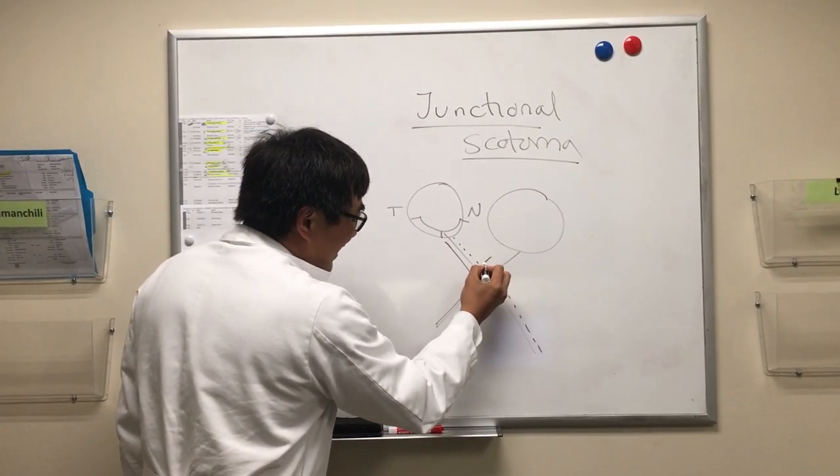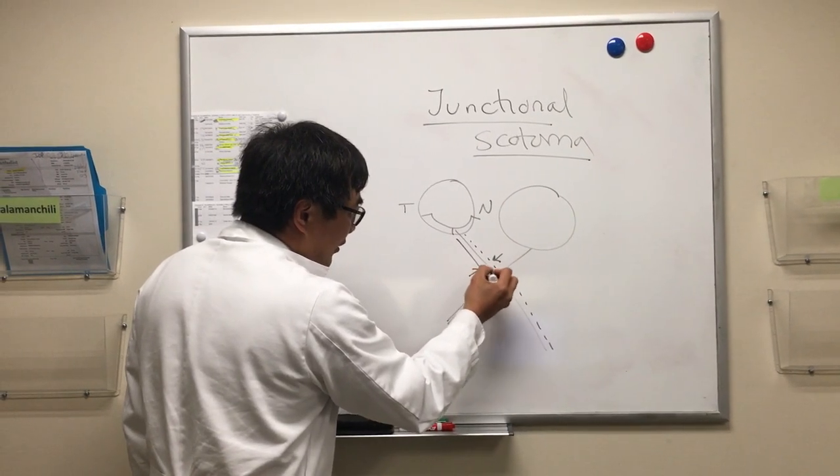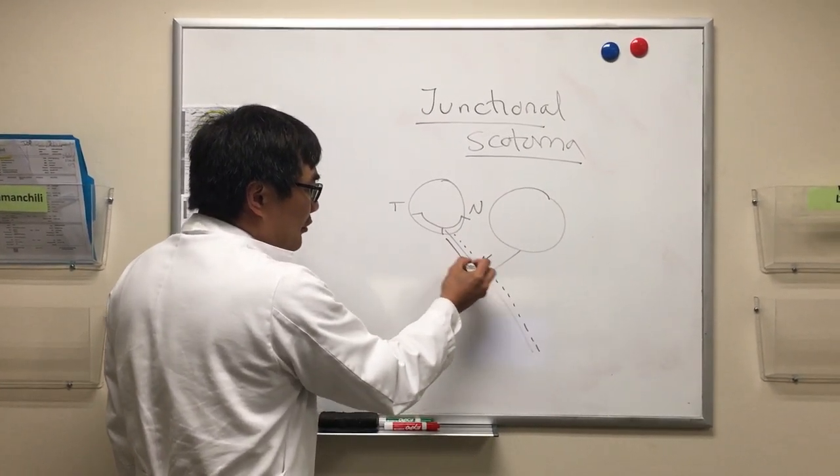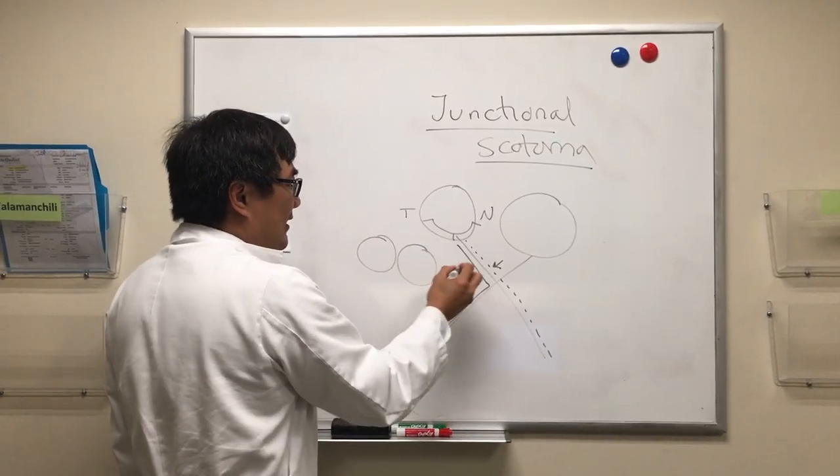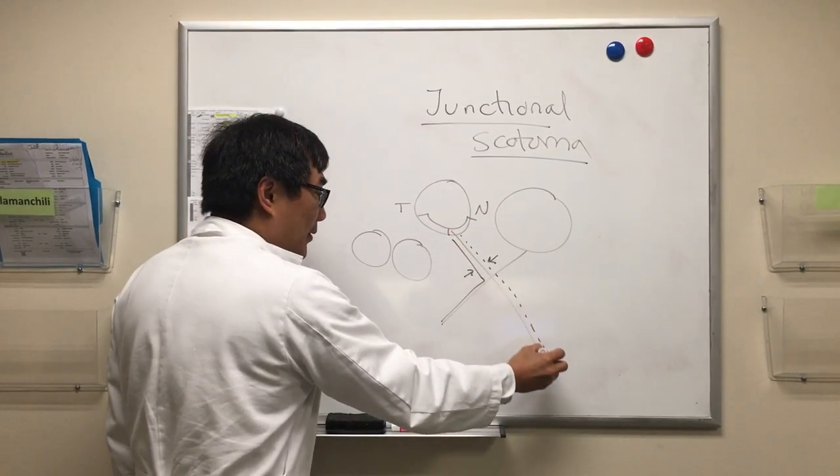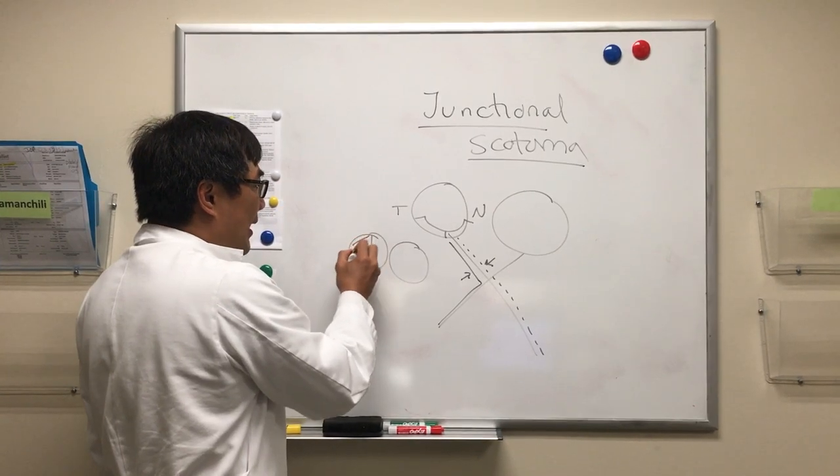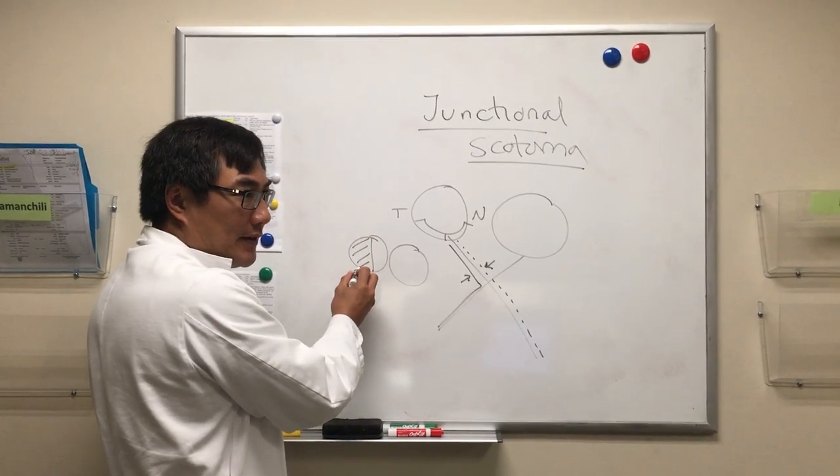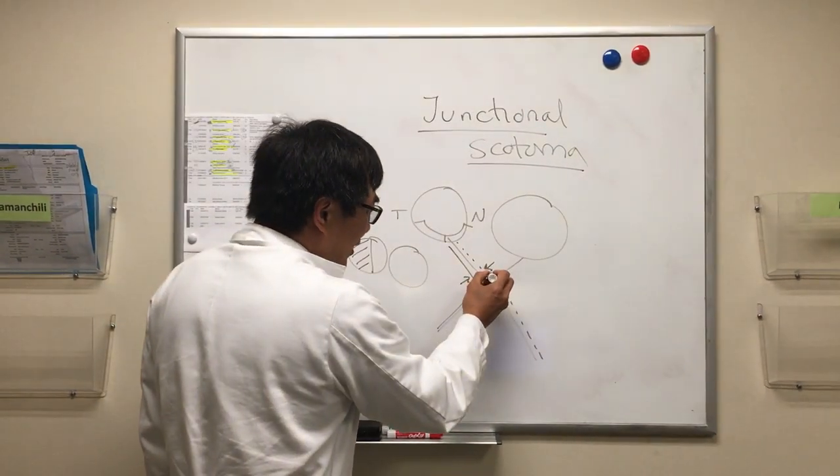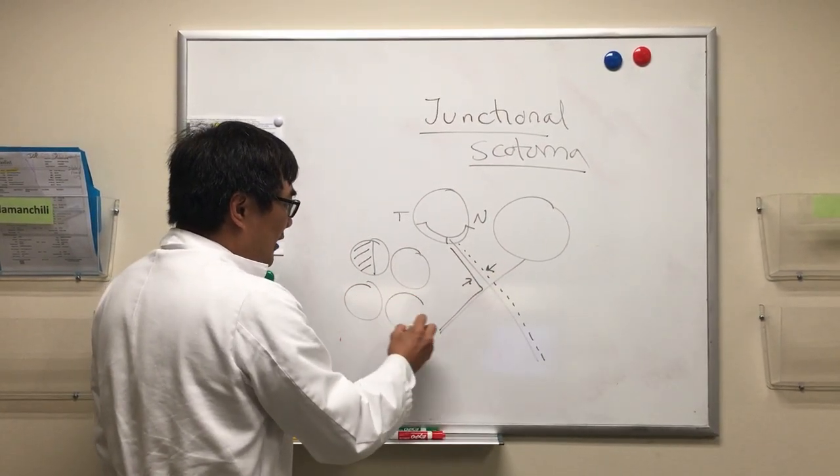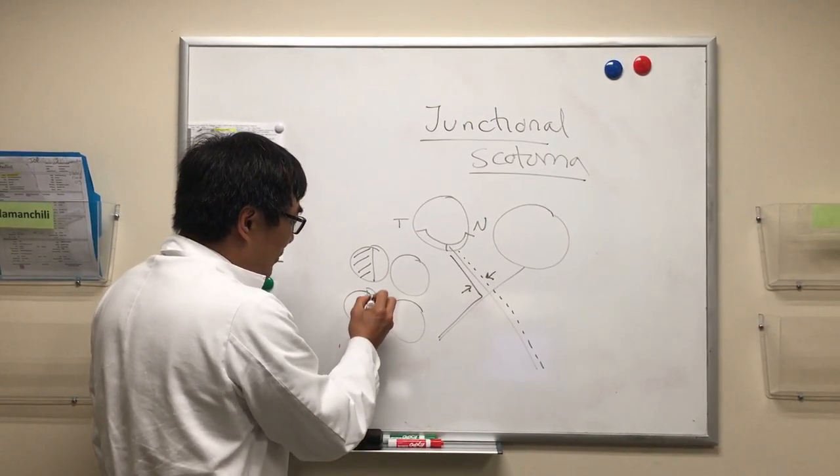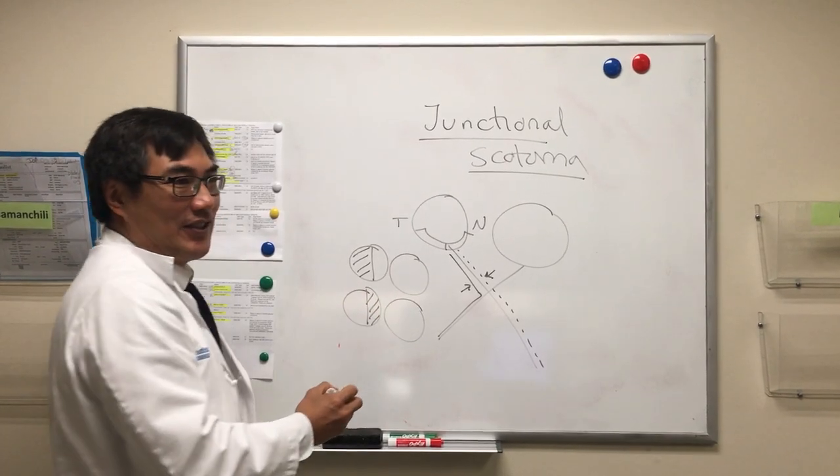So a lesion at the junction of the optic nerve and the chiasm can produce a field defect that only affects the nasal crossing fiber, which will produce a monocular temporal hemianopic field defect, or it can only press on the temporal uncrossed fiber. If it presses on the temporal fiber, then you'll get a monocular nasal field defect.